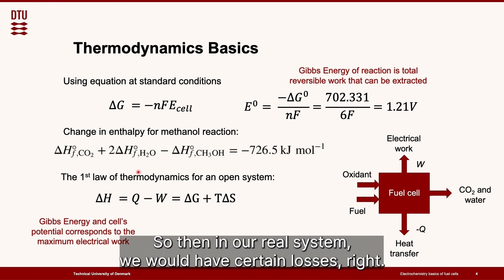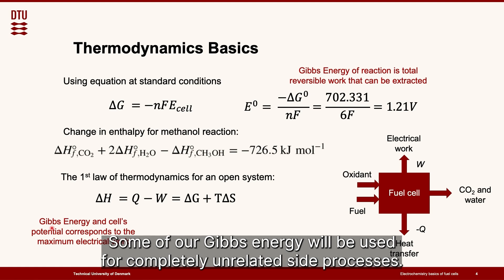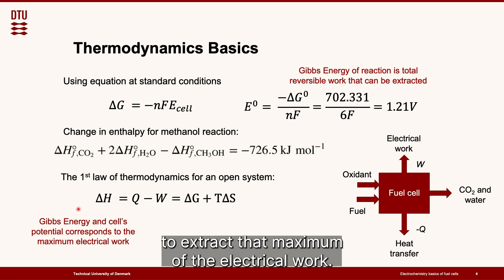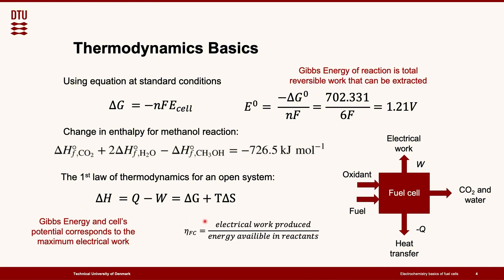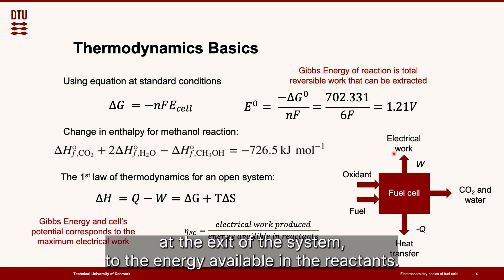So in our real system we would have certain losses, because it's not a closed system, it's an open system. Some of our Gibbs energy will be used for completely unrelated side processes, so it's never enough actually to do a full conversion to extract that maximum of the electrical work. So when we are considering fuel cell efficiency, we need to consider electrical work which is actually produced at the exit of the system to the energy available in the reactants.